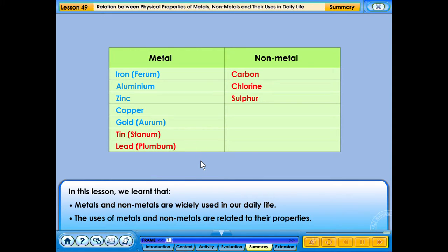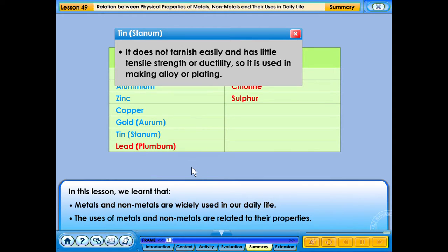It does not tarnish easily and has little tensile strength or ductility, so it is used in making alloy or plating.